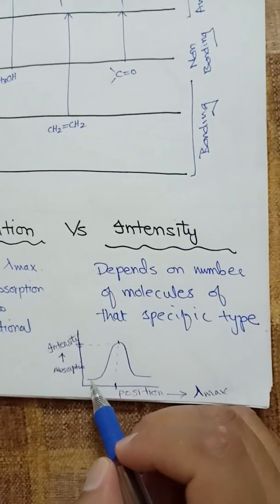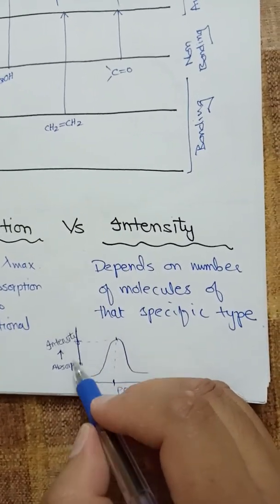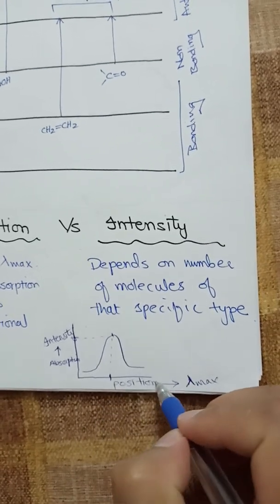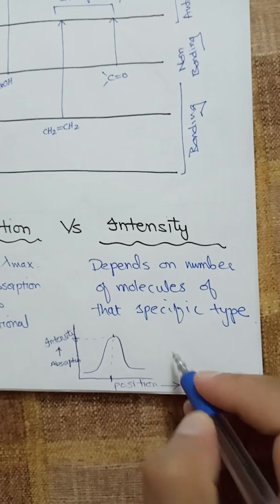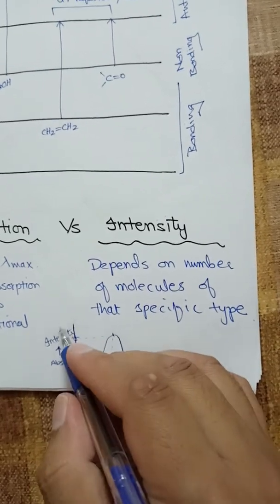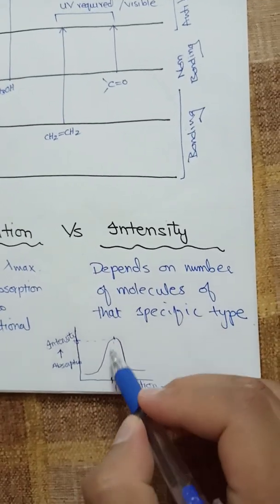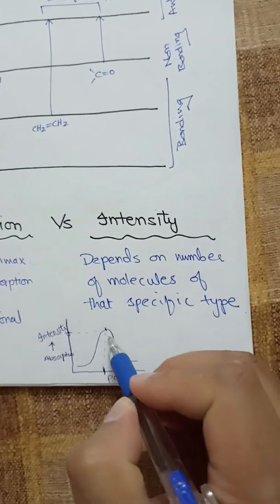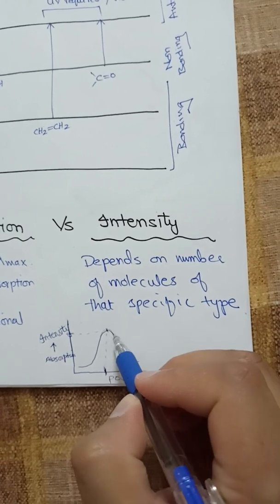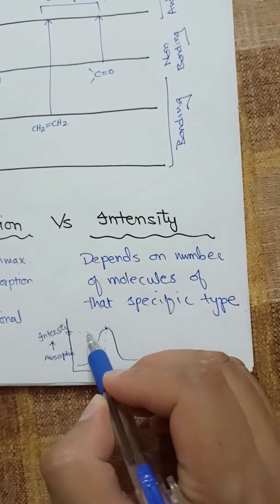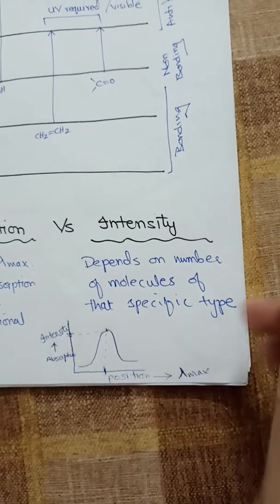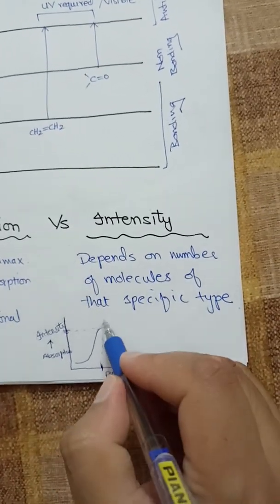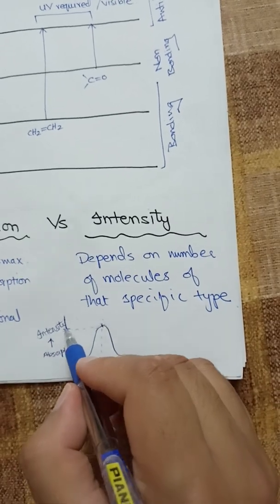In the graph, absorption is shown on the y-axis and wavelength (lambda) on the x-axis. The position of the peak is represented by lambda max, and the height of the peak represents the intensity of absorption — indicating how many molecules are present.